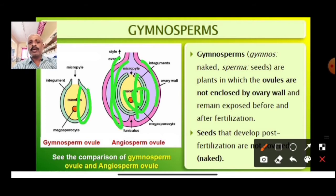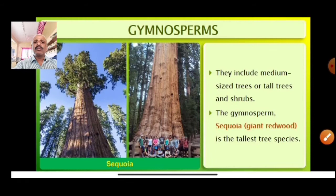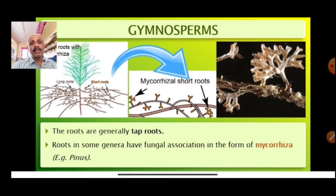In gymnosperms there are no ovary walls — the ovules are totally naked, unlike angiosperms where the ovary wall encloses the ovule. Gymnosperms include medium-sized to very tall trees; the redwood is among the tallest species. The roots are generally tap roots.